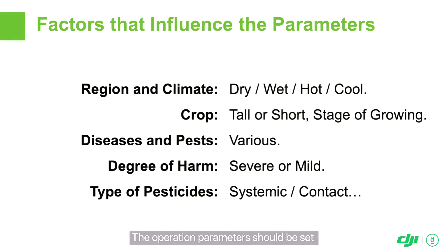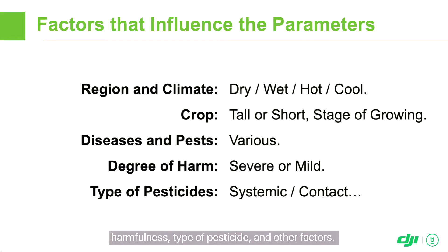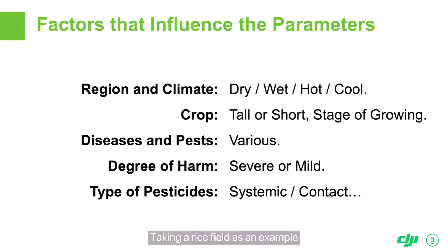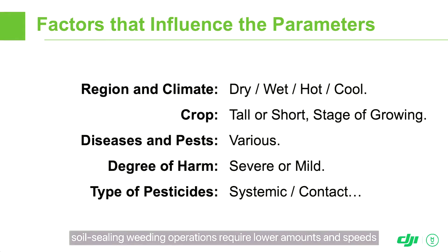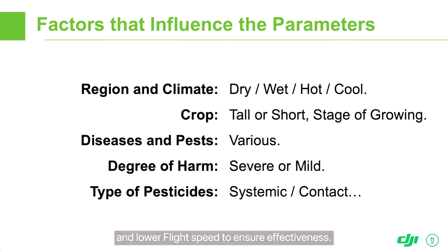The operation parameters should be set after considering the region, crop, type of disease or pest, harmfulness, type of pesticide, and other factors. No one set of parameters is suitable for all operations. Taking a rice field as an example, soil sealing weeding operations require lower amounts and speeds, while stem and leaf application weeding requires a higher spraying amount and lower flight speed to ensure effectiveness.